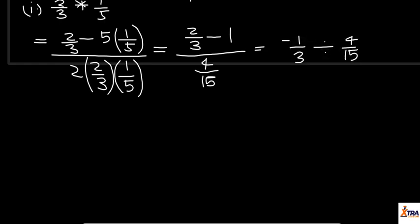Converting my division sign to multiplication, I will be having minus 1 over 3 times 15 over 4, which when broken down will give me a final answer of minus 5 over 4. So, this will be my answer for number one.